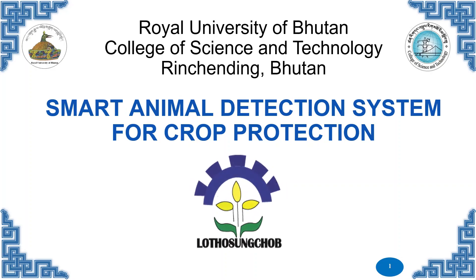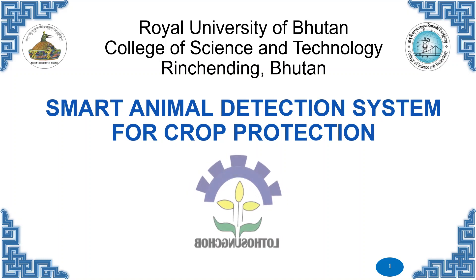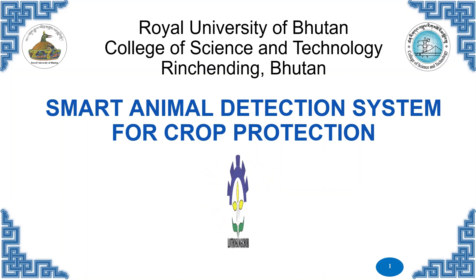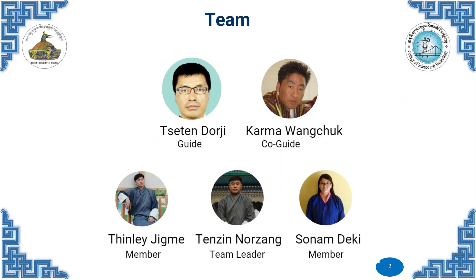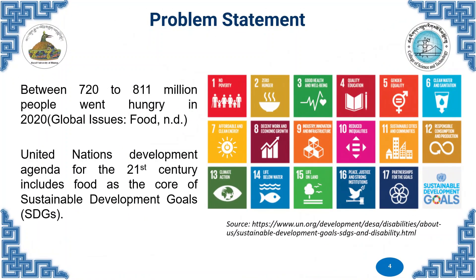Welcome to the final year project presentation of 2023. Our project is on a smart animal detection system for protection. Moving on to the problem statement: according to global issues in 2020, 720 to 811 million people went hungry. One of the core sustainable development goals of the United Nations is zero hunger, showing the importance of food security at an international level.